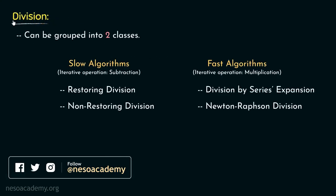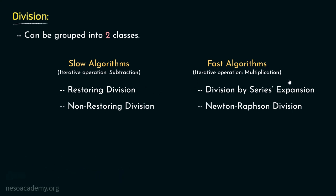In the previous session when we learned about the division procedures, we observed that the division procedures can be grouped into two classes: the slow algorithms where the iterative operation is subtraction, and the fast algorithms where the iterative operation is multiplication. In the course of COA, we are not going to learn about the fast algorithms. We are going to observe some of the slow algorithms, starting off with the restoring division procedure and the non-restoring division method. In this session and in the upcoming session, we are going to learn about the restoring division.